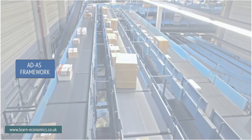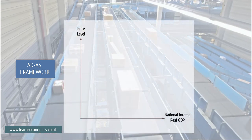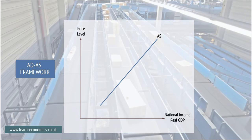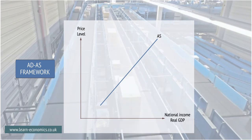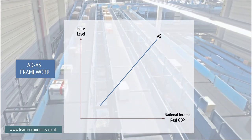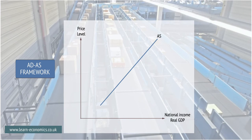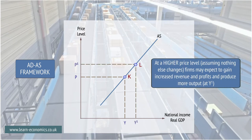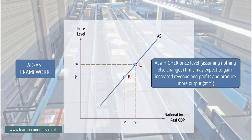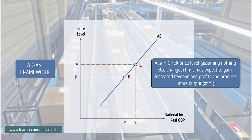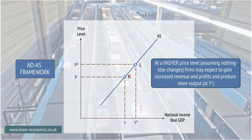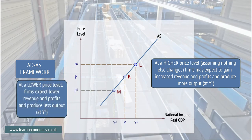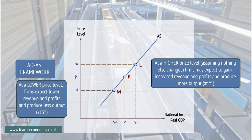Aggregate Supply is the sum of goods and services an economy is willing and able to produce in a period of time. In the short run, the Aggregate Supply curve, or AS curve for short, slopes upwards. Assuming nothing else changes, at higher prices, firms may expect to gain more revenue and profits and produce more output at Y1. At a lower price level, firms expect lower revenue and profits and produce less output at Y2.